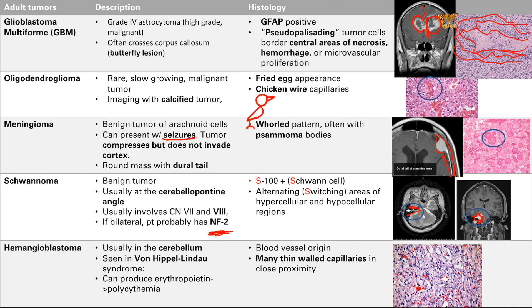Next is hemangioblastoma — a tumor of blood vessel origin, as you can tell from 'heme angio,' and 'blastoma' for tumor. It usually arises in the cerebellum. The syndrome associated with this is von Hippel-Lindau syndrome, which involves renal cell carcinoma, hemangioblastoma, and retinal angiomas.